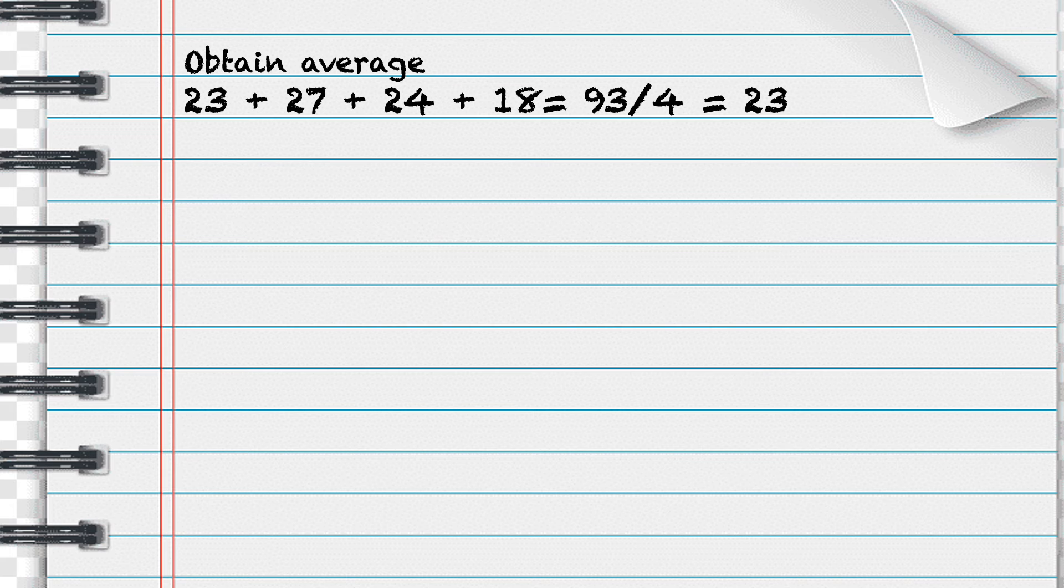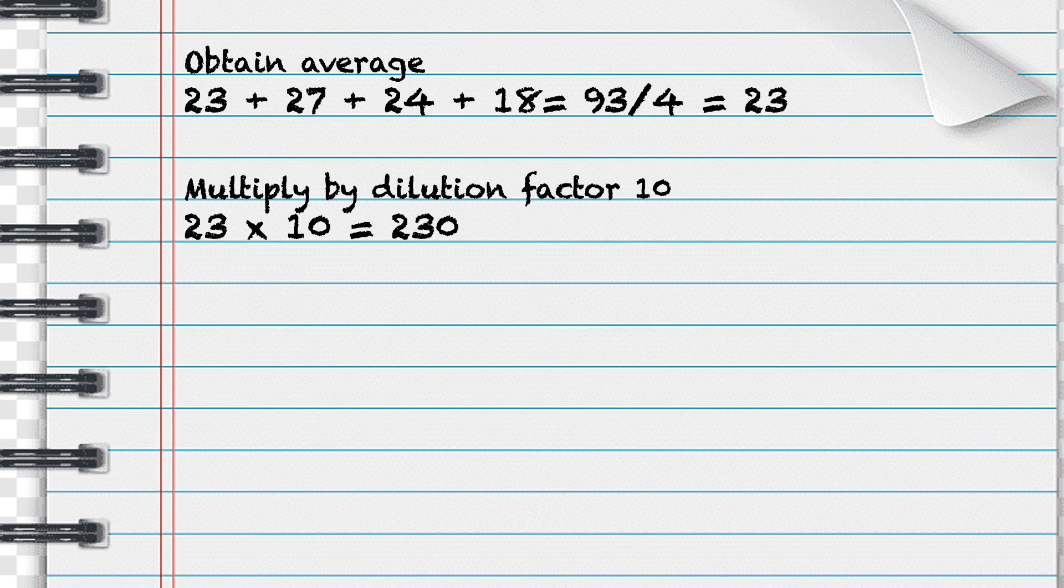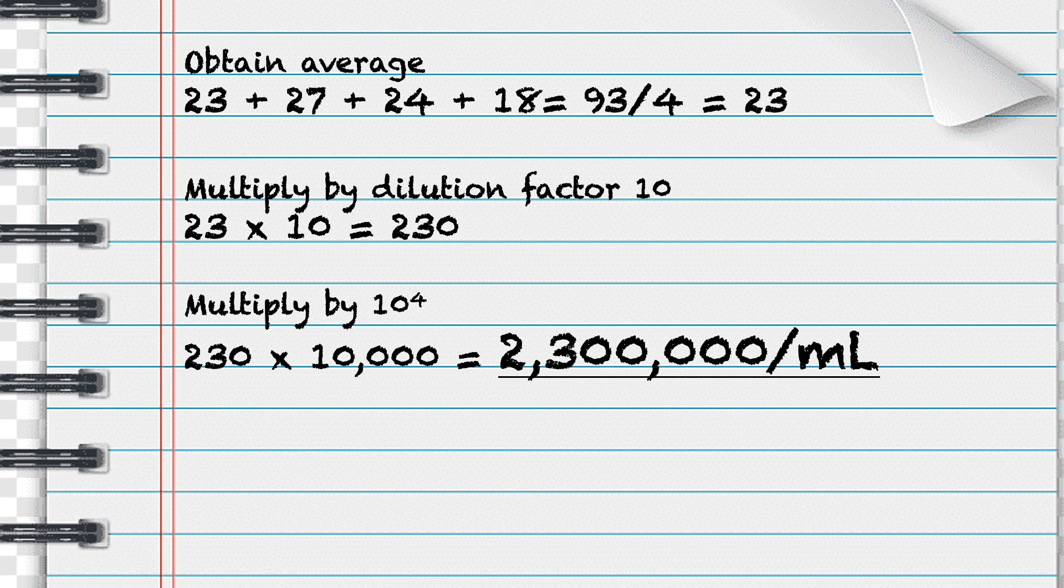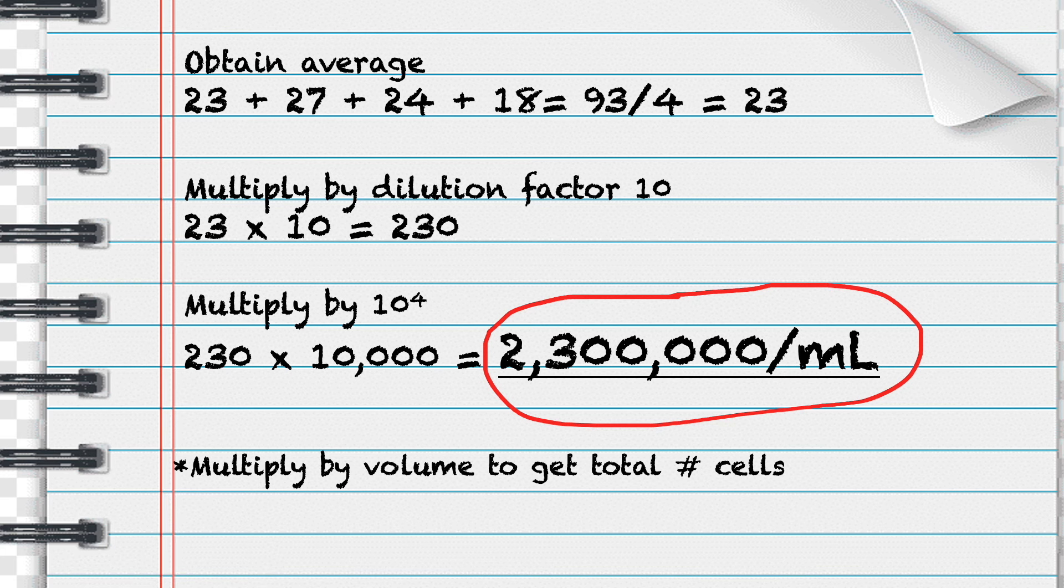Once we count the cells in the four corner squares, we calculate the average. Then we multiply by our dilution factor of 10. Remember we added 10 microliters of cells to 90 microliters of trypan blue. Then we multiply our number by 10,000 or 10 to the fourth in order to calculate the number of cells in 1 mL. So here we see our total number of cells per mL is 2.3 million. We can now multiply by the total volume in order to get the total number of cells.